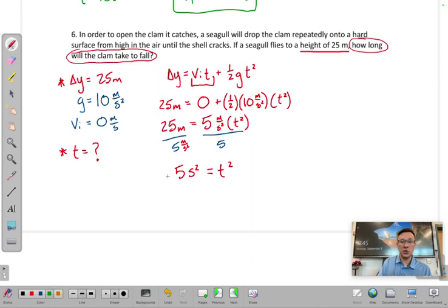And we will find that the time is equal to the square root of five, which we better plug into our calculators because that is going to be 2.24.